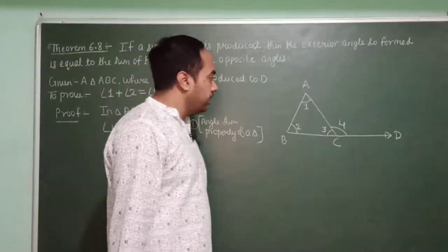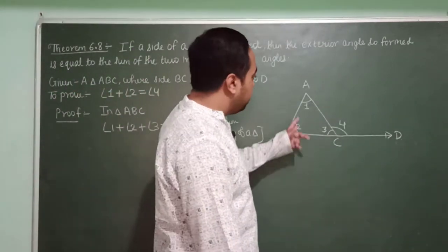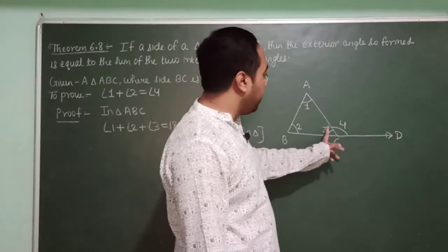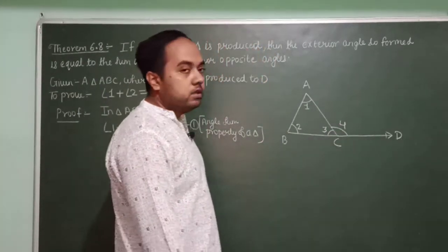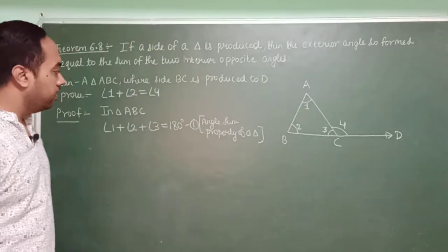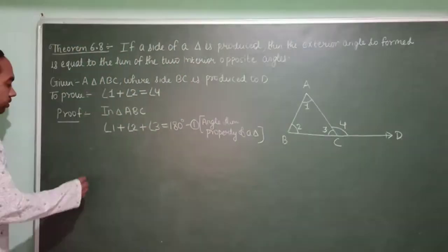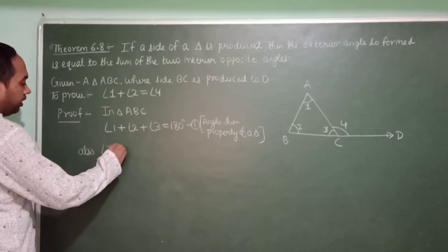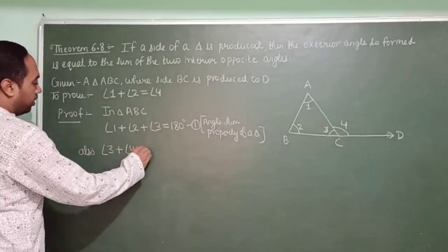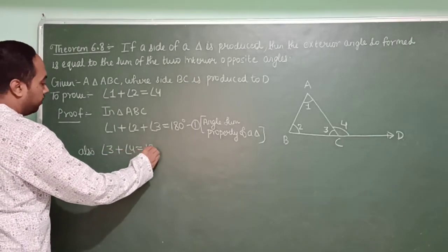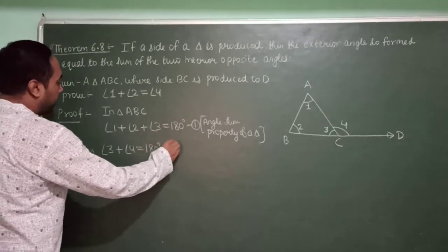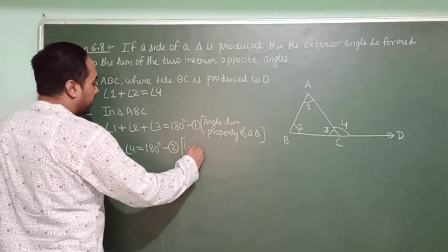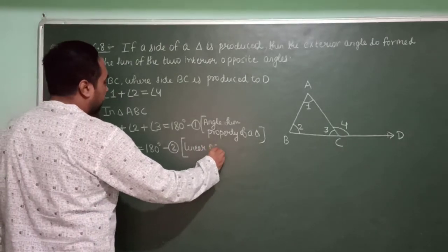Also, angle AC is standing on line BD. So the sum of angle 3 plus angle 4 equals 180 degrees. This is equation number 2, by linear pair.